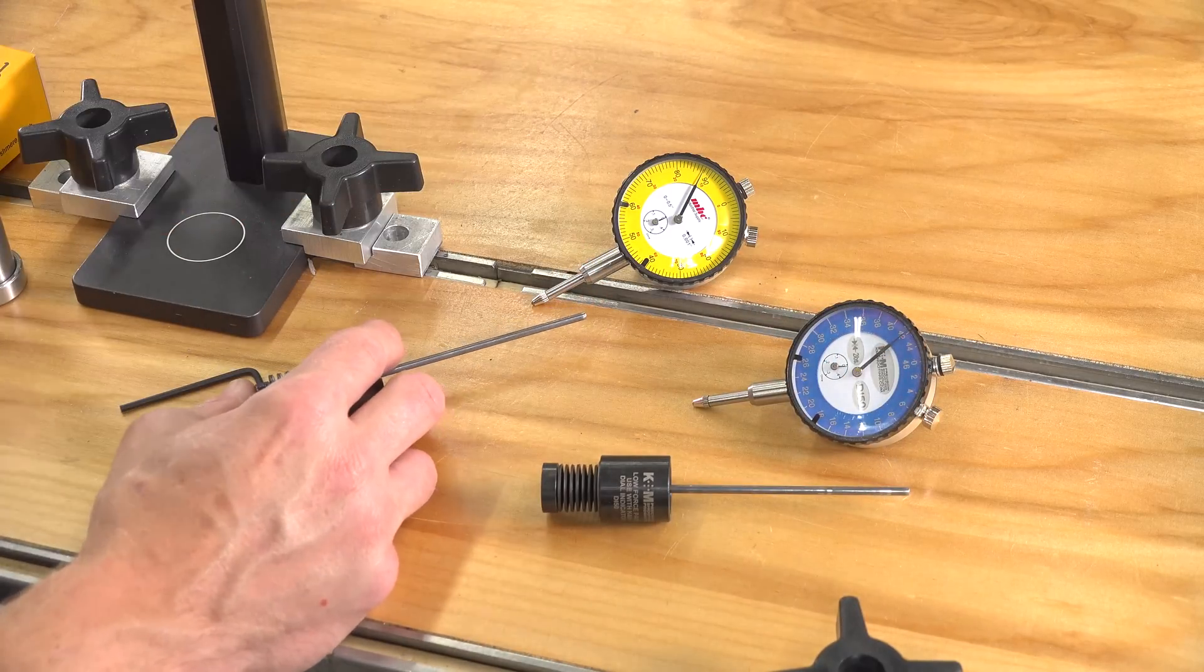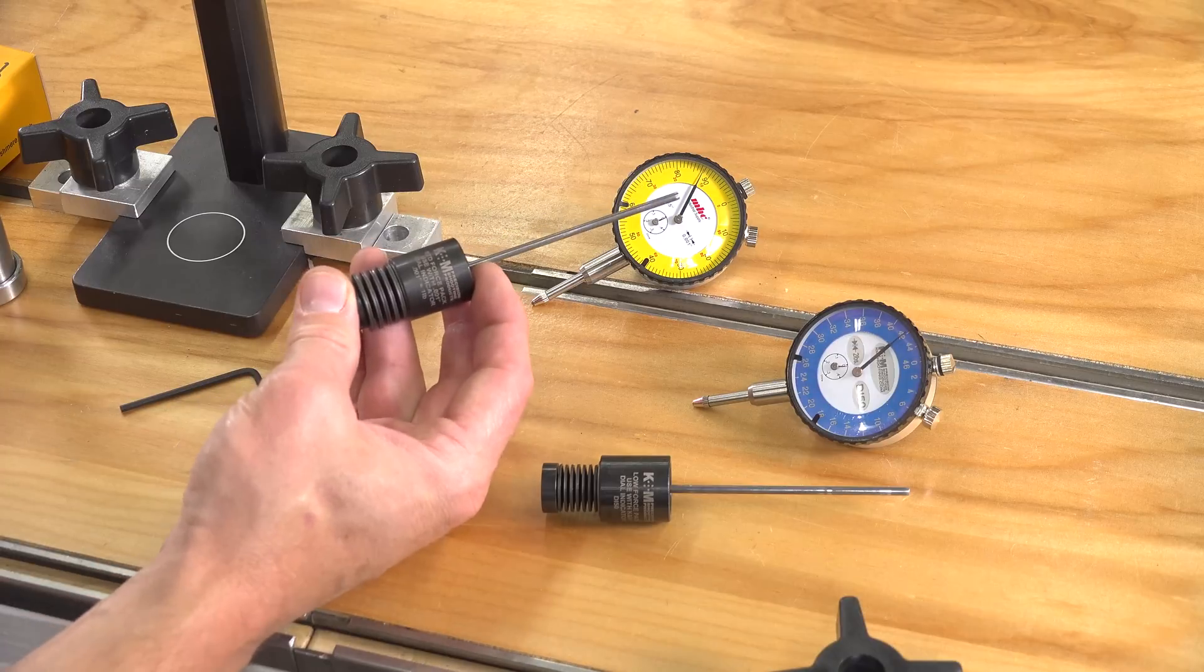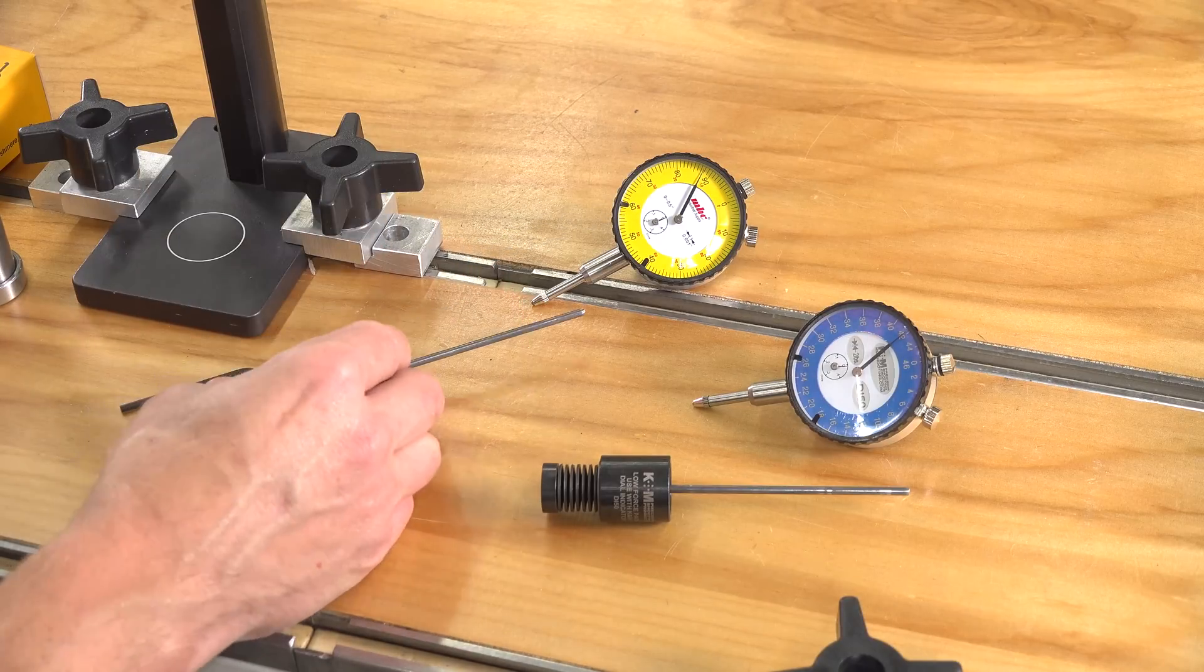And if you have typical bullet seating forces, the standard force pack is going to be what you're after. Let's get this installed on the Arbor Press.